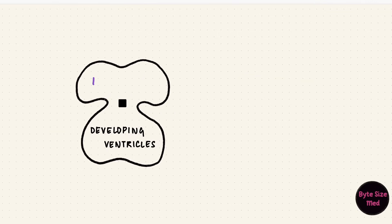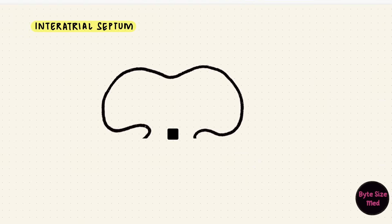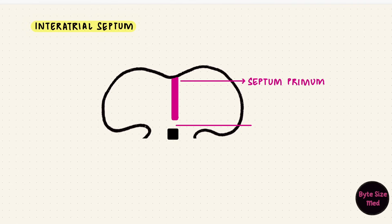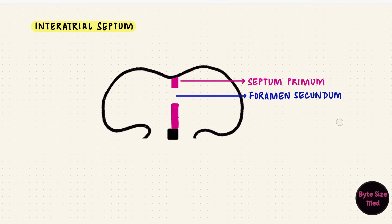Now this is a common atrium, and that has to split into right and left atria by the formation of an interatrial septum. There's growth of tissue from the roof of the atrium towards those fused endocardial cushions. This is called the septum primum — primum because it's the first septum. As it grows, there's a space between the lower end of the septum and the cushions, called the foramen primum, because it's an opening. Before it can close completely, there are perforations that form in the upper part of the septum primum from apoptosis. They fuse and form a second opening called the foramen secundum. The foramen primum is no longer there.